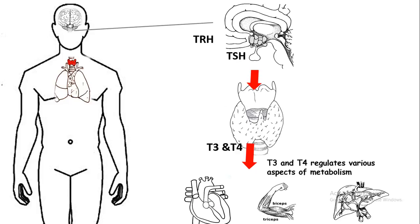There is a negative feedback regulation controlling thyroid secretion. When levels of T3 and T4 are too high, they signal the hypothalamus to release less TRH, thereby reducing TSH secretion and checking further production of T3 and T4.